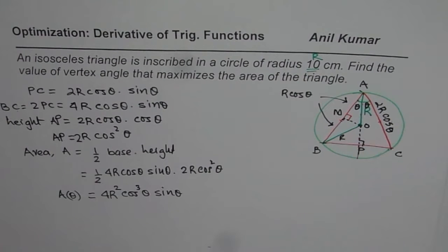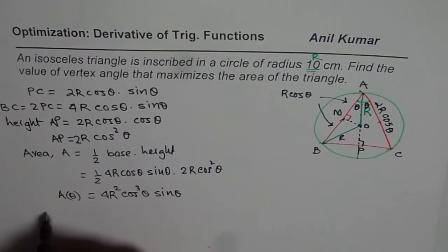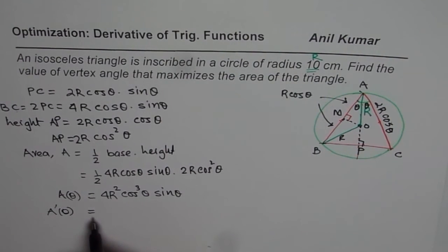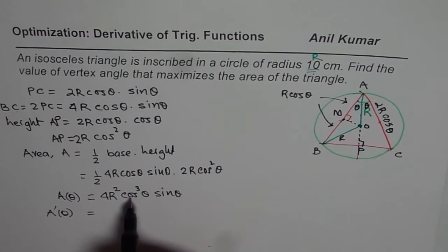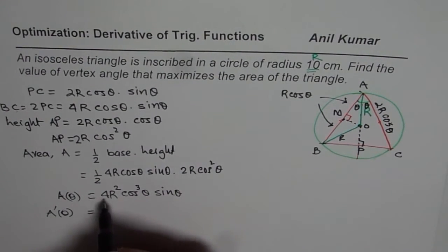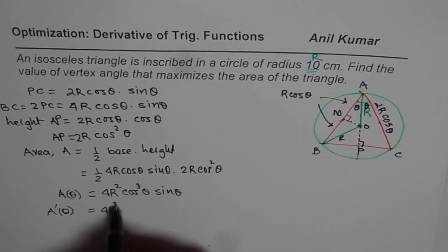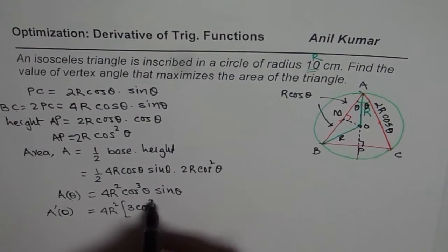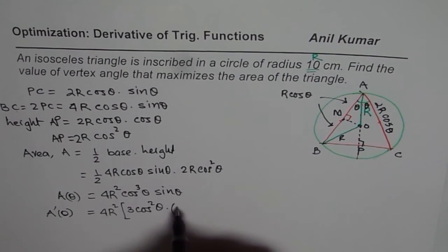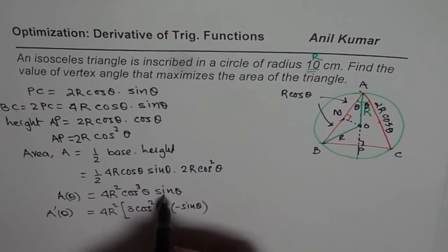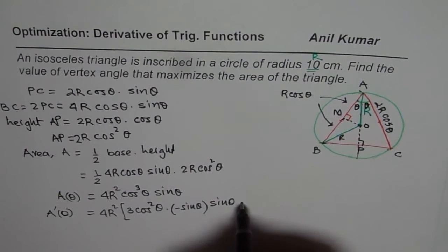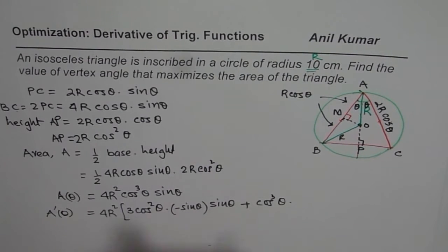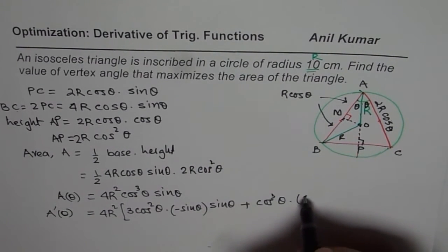Once we know the area, we can find the derivative and equate it to zero to find the critical number. To find the derivative we apply the product rule, with 4r² as a constant. The derivative of cos³θ is 3·cos²θ·(−sin θ), times sin θ. Plus cos³θ times the derivative of sin θ, which is cos θ.